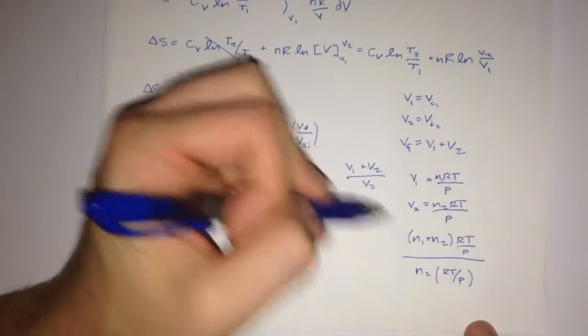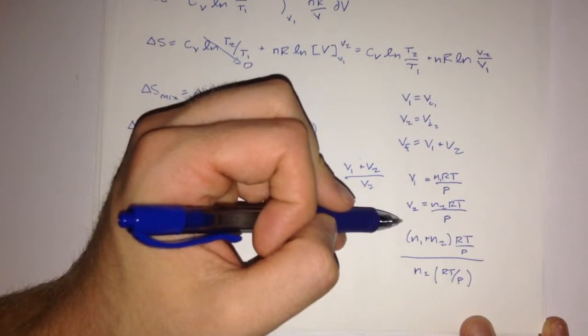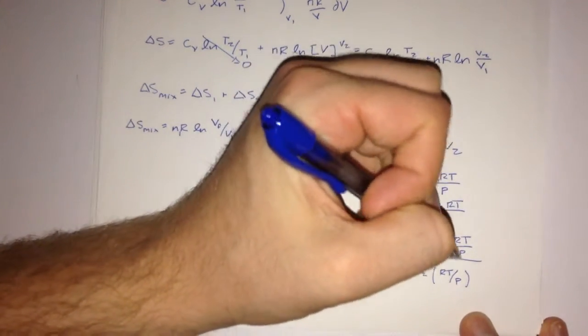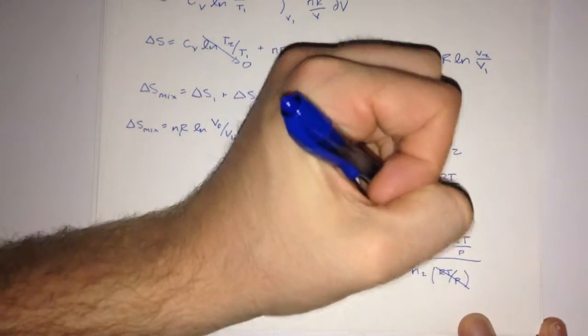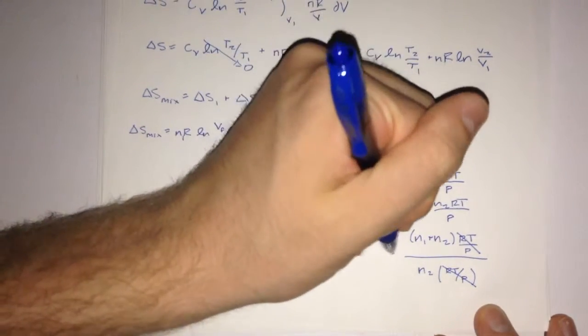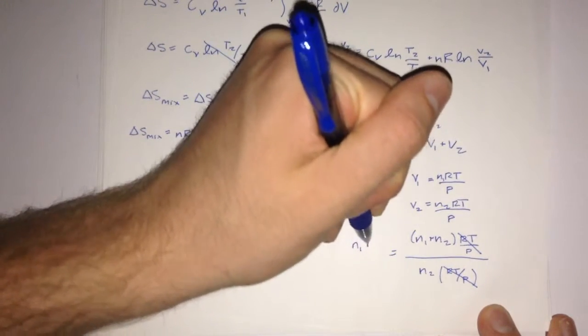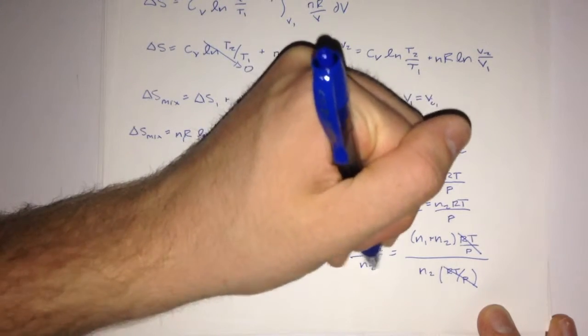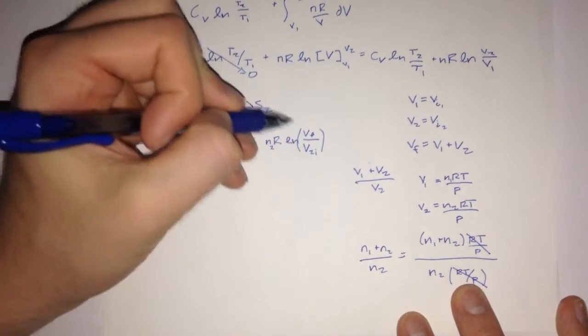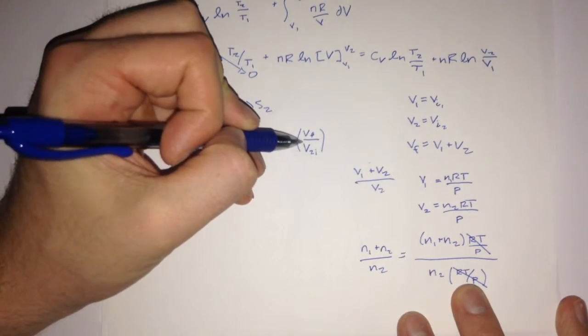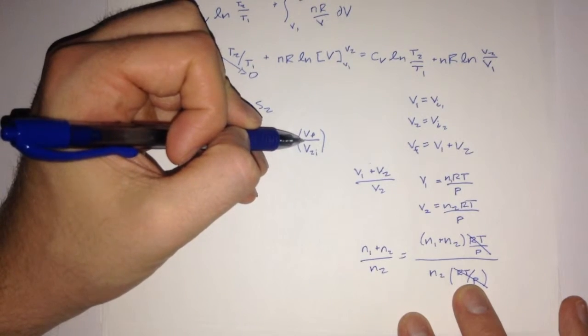I hope you can intuitively see how that happened. And you can also realize that we can cancel out these two terms. So all we're left is n1 plus n2 all over n2. We'll be able to substitute in for that term.